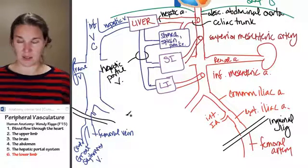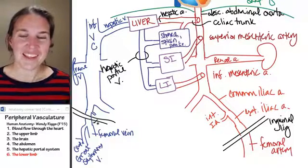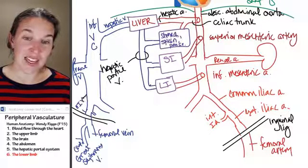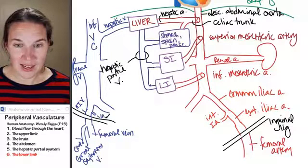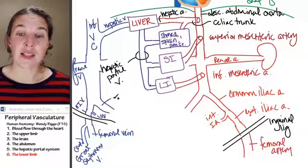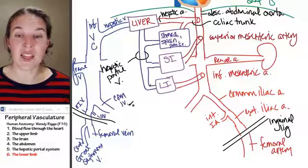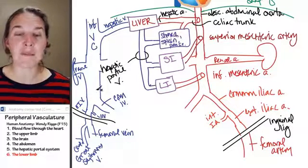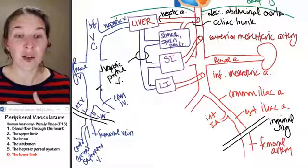So this was external iliac vein, this was internal iliac vein, this is common iliac vein. All of them flow into inferior vena cava and back to your lub-dub, lub-dub, lub-dub heart.